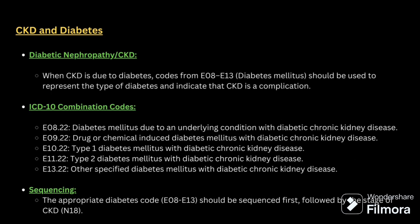Next is CKD and diabetes. When CKD is due to diabetes, we should code diabetes first. E08 to E13 should be used to represent the type of diabetes. The ICD combination code for diabetes mellitus due to CKD is E08.22. Sequencing: the appropriate diabetes code should be sequenced first, followed by the stage of CKD.